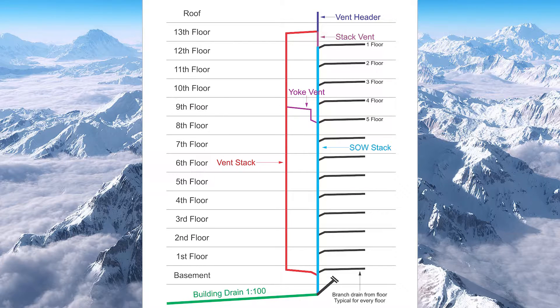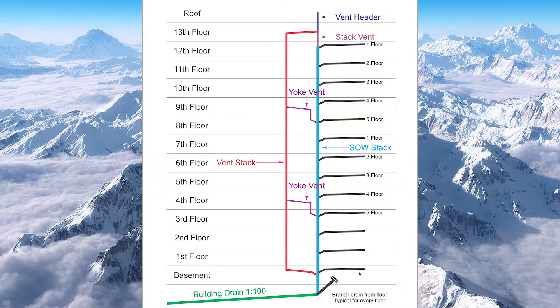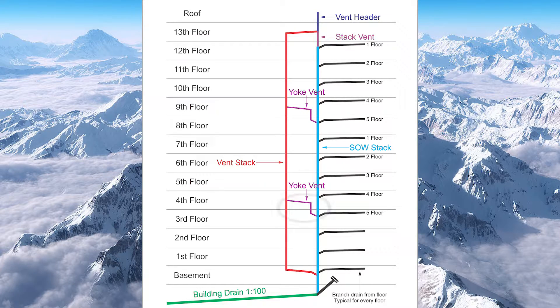Right at that fifth drain connection, let's put in a Yolk Vent — it should look something like this. Now from that Yolk Vent connection, I'm going to count down a further five connections or five floors and put in another Yolk Vent, which is going to look exactly like this.